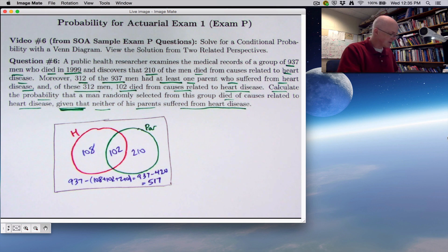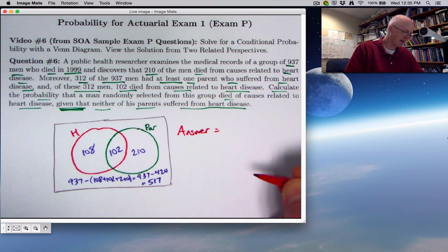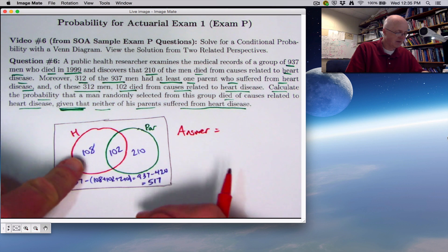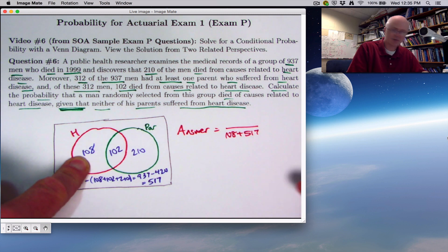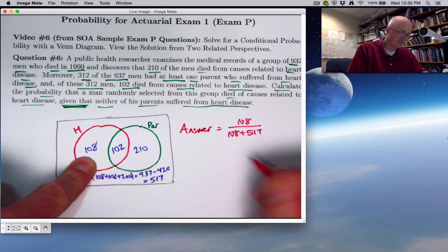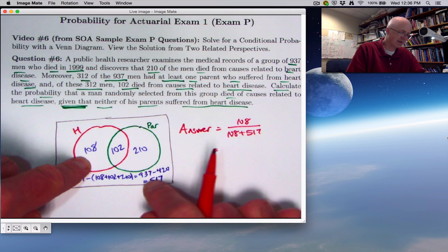Now, to get the answer to the question, you can just think intuitively. Given that neither parent suffered from heart disease, you're outside the green circle. You're one of these two groups. How many men are in that group? 108 plus 517, that's 625. How many of them died from heart disease? The 108. This is going to be the answer. That's the ratio of the number in this red crescent divided by the total that are outside the green circle.